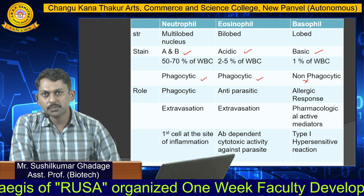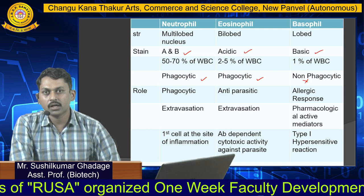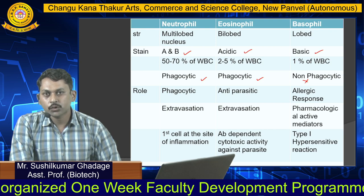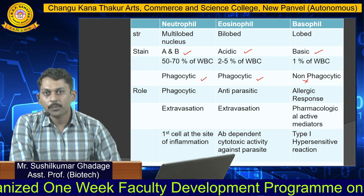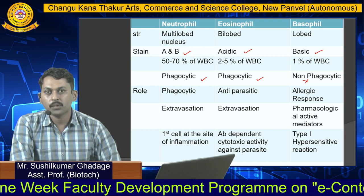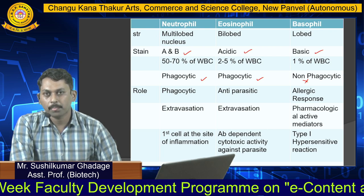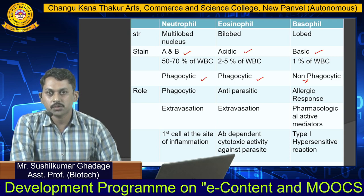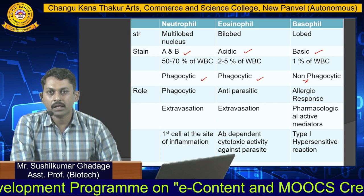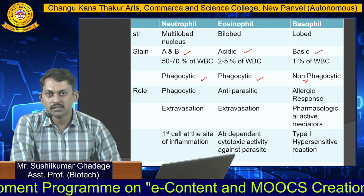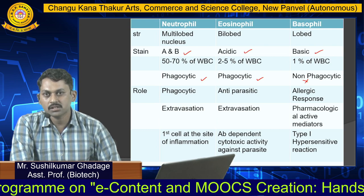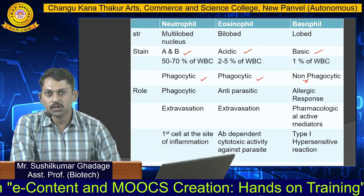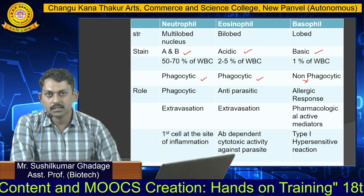Regarding the roles of neutrophils: they are phagocytic in nature and show a property called extravasation — they can enter from the blood circulatory system into the tissue spaces and arrive at the site of inflammation. They are the first cells to arrive at the site of inflammation.